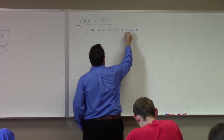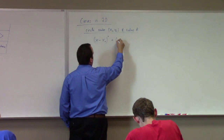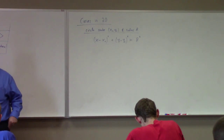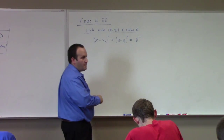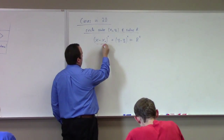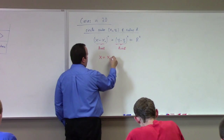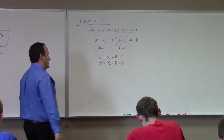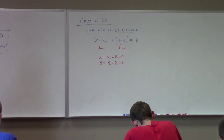The Cartesian equation for that circle: the parametric equations are x equals x-naught plus r cosine t, y equals y-naught plus r sine t. Those are the scalar parametric equations for a circle with radius r centered at x-naught, y-naught. Hopefully you know this already.